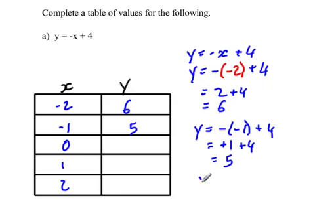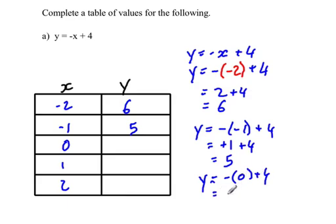And you should start to see the pattern here. So this will be negative times 0 plus 4. Negative 1 times 0 is 0, so this is just going to be 4.